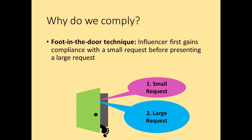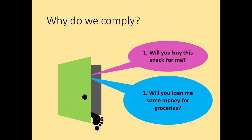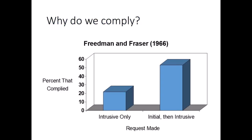The next strategy is the foot-in-the-door technique. First, the influencer makes a small request that the target is likely to comply with. Then they make a larger request — the real one. For example, we might ask a friend, 'Will you buy this snack for me?' They'll likely comply, and then we make the real request and ask for some money to buy groceries. According to self-perception theory, this works because compliance with the initial request alters their self-perceptions, leading them to believe they are helpful people, and they comply with the second request to maintain consistency with their self-image.